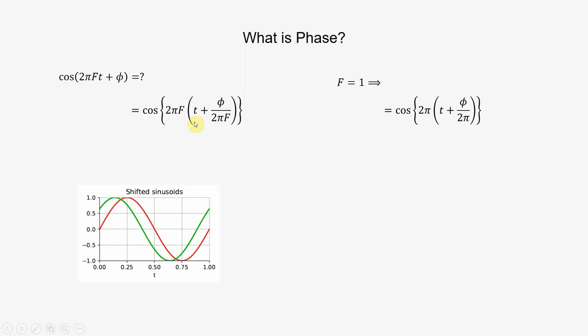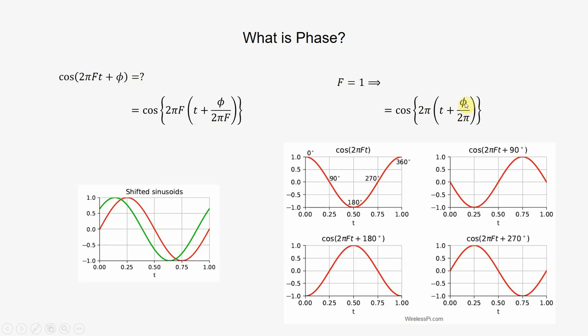Now we can see that when φ is 0, then this is cos 2πt, a frequency 1 sinusoid. When φ is 90 degrees, then this is 90 over 360, 1/4. Here we can see that this sinusoid is shifted by 1/4 period and this point comes here, and this is cos 2πft plus 90 degrees.